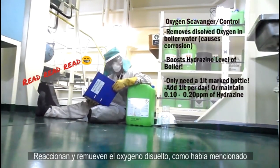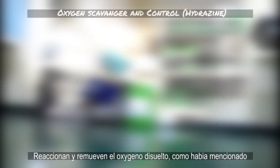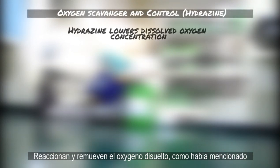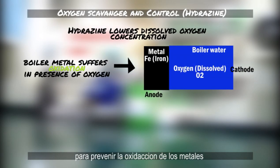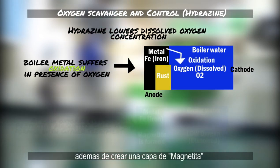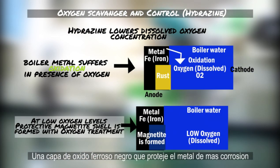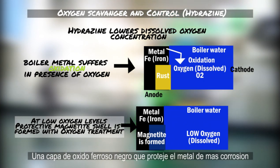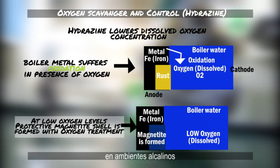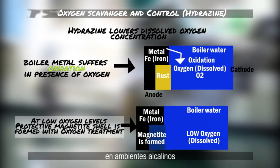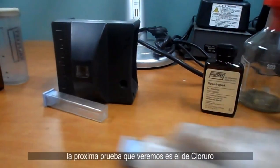To control hydrazine levels, we use Unitor's oxygen scavenger or control chemicals. They remove dissolved oxygen to prevent oxidation of the metals, and also form a coat of magnetite — a black iron oxide film that protects the metal from further corrosion in alkaline environments.